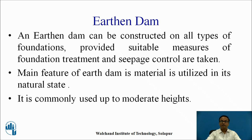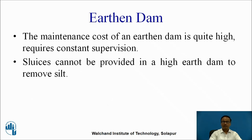The main feature of an Earthen Dam is that the material used for construction is available in its natural state. It is commonly used up to moderate heights — we cannot use Earthen Dam for larger heights. The maintenance cost is quite high, requiring constant supervision as there is a chance of seepage of water through the body of the dam. Also, sluices cannot be provided in a high Earthen Dam to remove silt, which is one of its drawbacks.